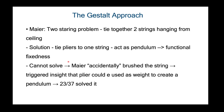With Maier, we have the two-string problem wherein a person needs to tie two strings hanging from the ceiling. The solution is to tie the pliers to one string to act as a pendulum — this demonstrates functional fixedness. Some subjects were not able to solve the problem. However, when Maier accidentally brushed the string, this triggered an insight that the pliers could be used as a pendulum, and about 80% were then able to solve the two-string problem.